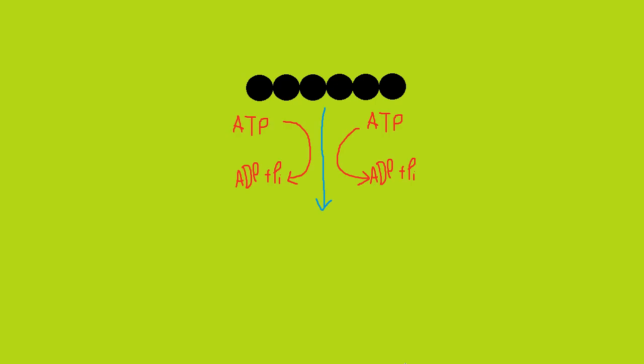The first stage of glycolysis is the activation of glucose by phosphorylation. The molecules needed to phosphorylate this glucose molecule come from the hydrolysis of two ATP molecules to ADP. These inorganic phosphates react further with the glucose to produce a phosphorylated glucose molecule.